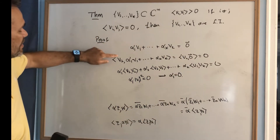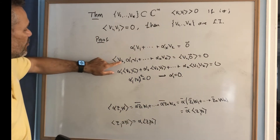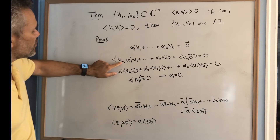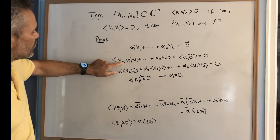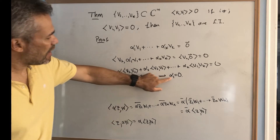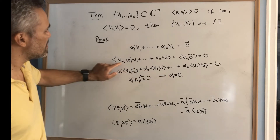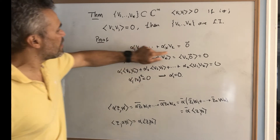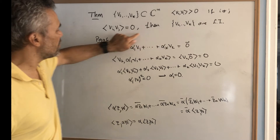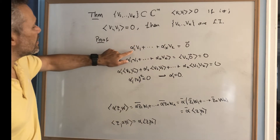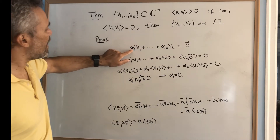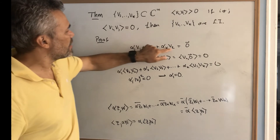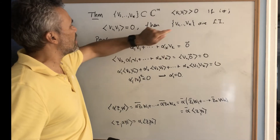Therefore α₁ must be zero. If we repeat the same argument multiplying by b₂, we get α₂ = 0, and so on for each vector. Therefore, if a linear combination equals zero, it only happens when all the αᵢ are equal to zero, which means the vectors are linearly independent.